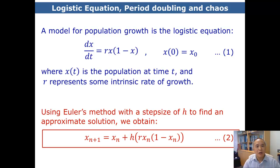Using Euler's method, we can use a step size of h to find an approximate solution to the logistic equation. And the formula will look like equation 2, x_(n+1) equals x_n plus h times r*x_n multiplied by 1 minus x_n.